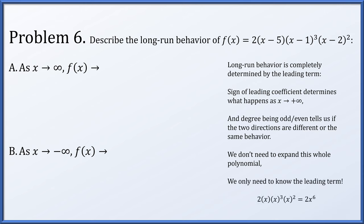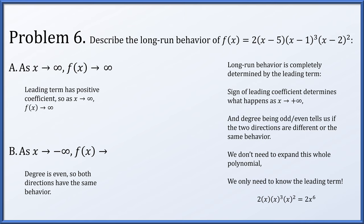We just need the leading term: 2 times x times x cubed times x squared = 2x to the sixth. The leading coefficient is positive. When the leading coefficient is positive, as x goes to infinity, f(x) goes to infinity. The degree is even, so the end behavior is the same in both directions. Since it goes to infinity on the right, it also goes to infinity on the left.